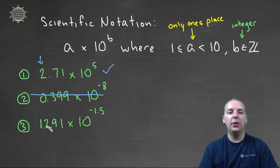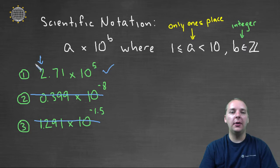Lastly, 1.291 times 10 to the negative 1.5, that's not in scientific notation. The 1.291 is between 1 and 10, but negative 1.5 is not an integer. So make sure you're very confident in what a number in scientific notation looks like.